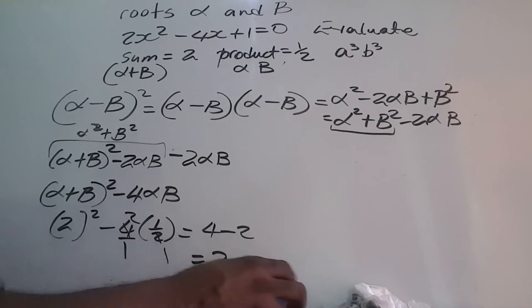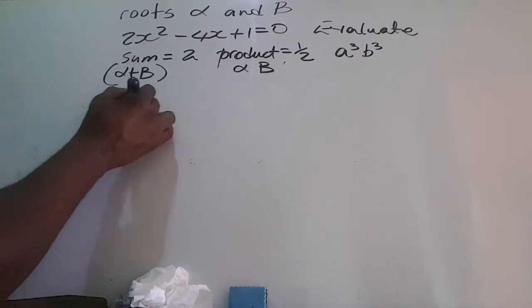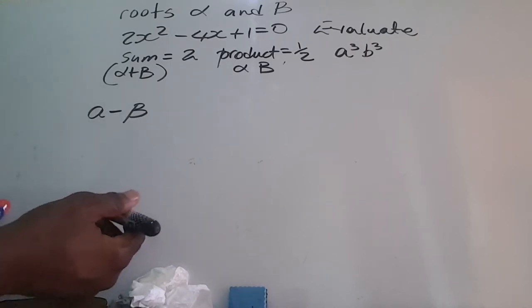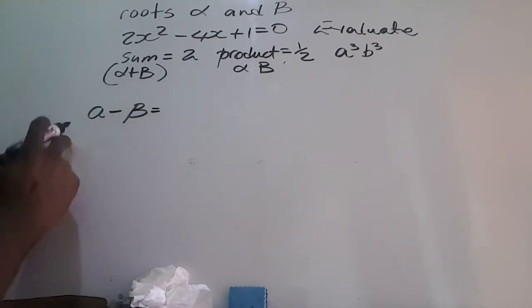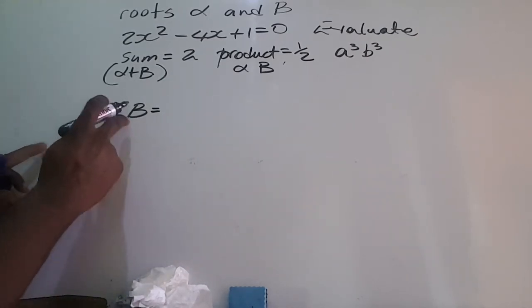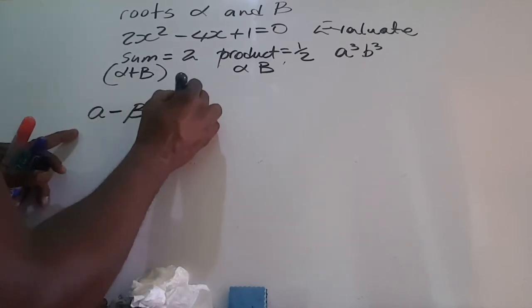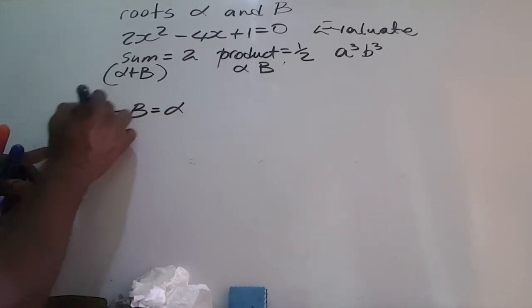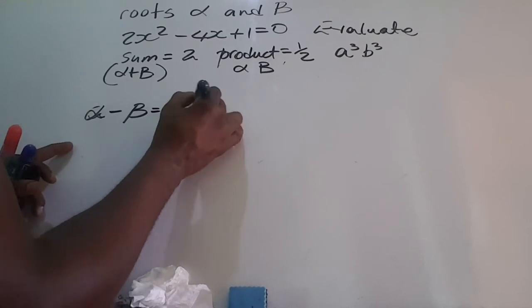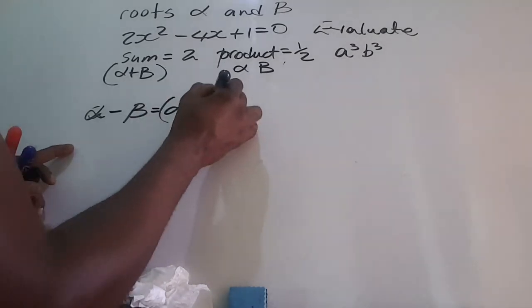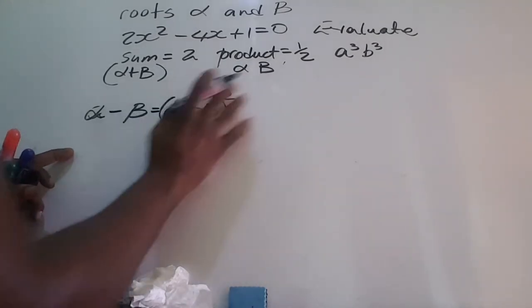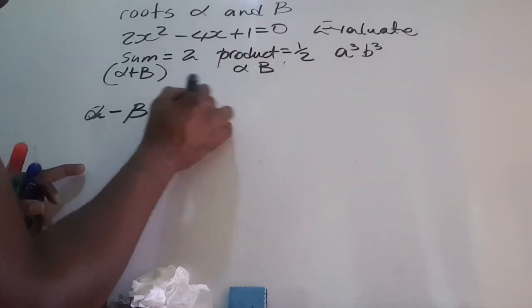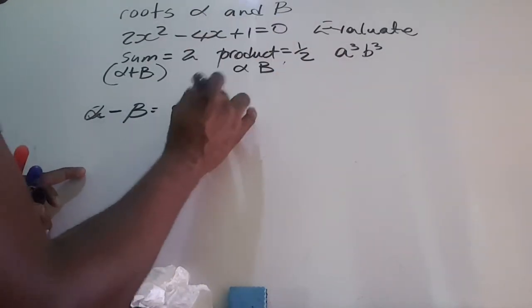So alpha minus beta all squared gives us a value of 2. For alpha minus beta without the square, we have to manipulate this. We'll square this like we did in a previous video, but when we square it it won't provide the answer right away.